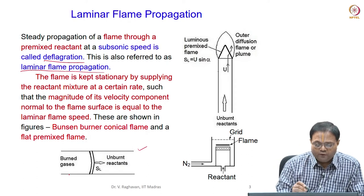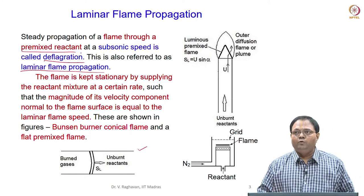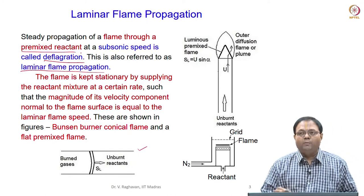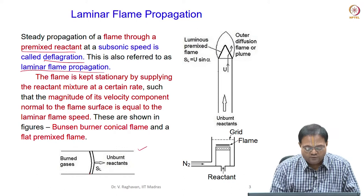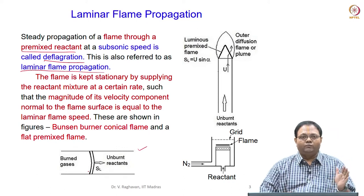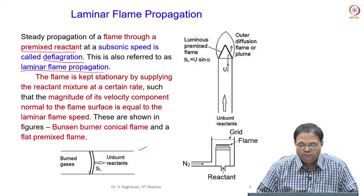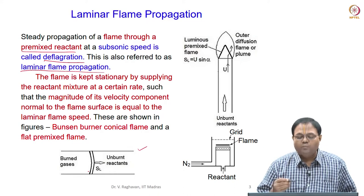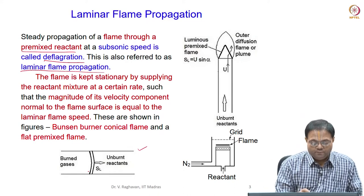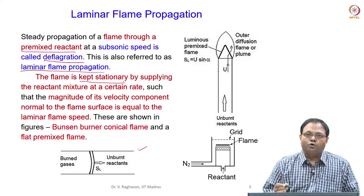Flame propagates through a premixed reactant mixture and we want to see how the flame propagation varies and how to analyze it. In test apparatus we allow the flame to propagate through a particular reactant mixture. But in actual applications we need to supply reactants at some rate and we normally seek the flame to be stationary — for example, kept stationary on a burner port.